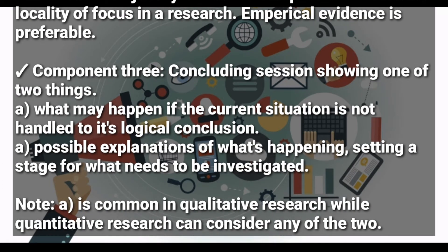Component three is a concluding section showing one of two things. Option A: it shows what may happen if the current problem is not handled — a logical conclusion — and this is common with qualitative research, things that are not numerical. Option B: it gives possible explanations of what is happening, setting a stage for what needs to be investigated. For quantitative research, it can consider both A and B — what may happen if the current problem is not handled, and also possible explanations of what is happening.